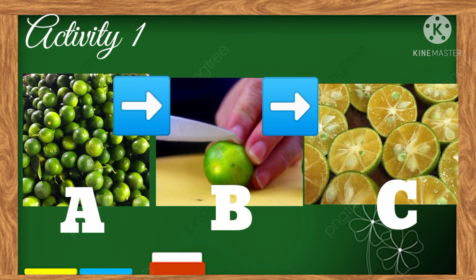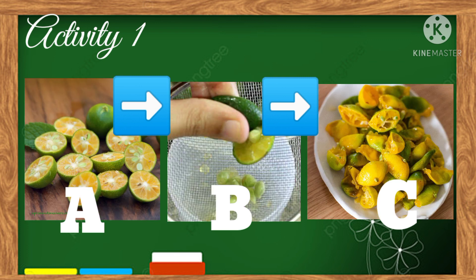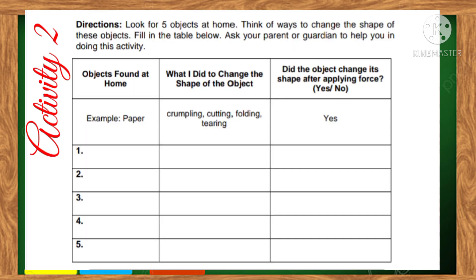As we can see in picture A, the shape of calamansi is round. After applying force by slicing it, as revealed in picture B, the shape was changed from round into a dome shape. The calamansi changed and became deformed. For activity number two, look for five objects at home and think of ways to change the shape of these objects, then fill in the table. Ask your parents or guardian to help you.